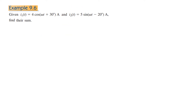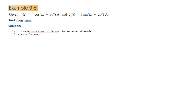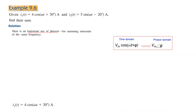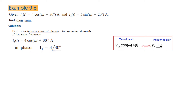Let's see example 9.6. We have i1 and i2 given, and we have to add them to find their sum. This is where we realize the importance of phasors: instead of adding sinusoidal signals directly — which is complicated — we convert to phasor, add easily, then go back to the time domain. Signal i1 is already in cosine form, so we just write the magnitude and angle: phasor i1 is 4∠30°.